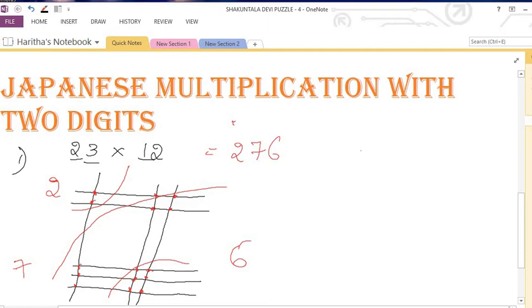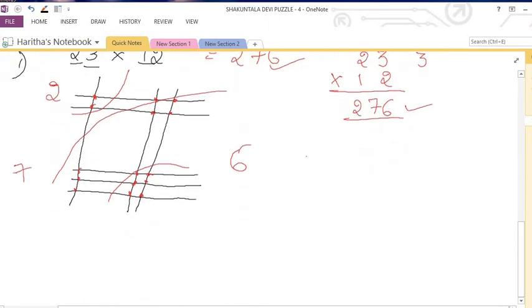OK, so if you want you can check it out. 23 into 12, I am doing directly with the 12 table. 12 times 3 is 36, 12 times 2 is 24 plus 3, 27 is my answer. Correct. OK, now we will solve one more example.